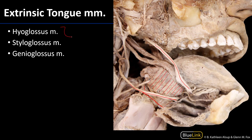These three extrinsic tongue muscles are all innervated by the hypoglossal nerve. The styloglossus arises from the styloid process of the temporal bone, running down, laterally, and anteriorly to insert into the tongue. The genioglossus originates from the superior spines at the genu of the mandible and fans outward. The genioglossus is one of the most substantial extrinsic tongue muscles.